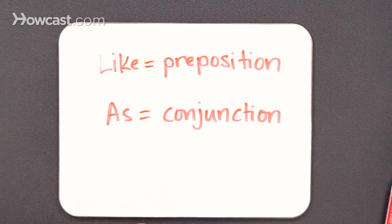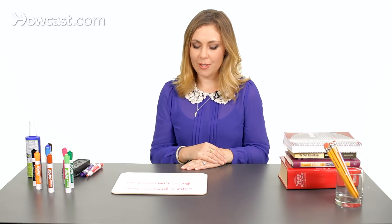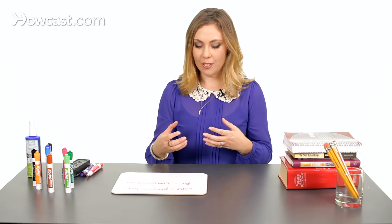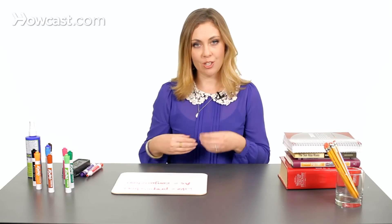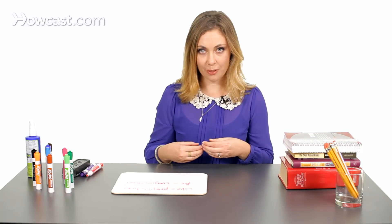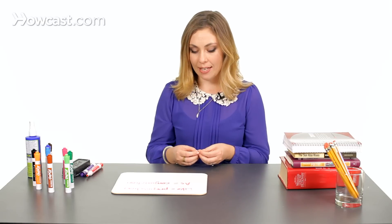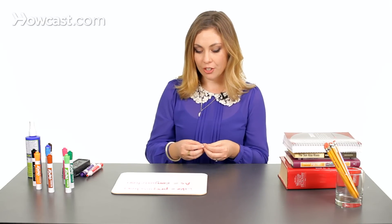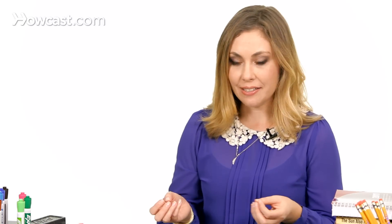Like is a preposition, whereas as is a conjunction. Like is used as a preposition to show the relationship between words in a sentence, and as is used as a conjunction to connect ideas.